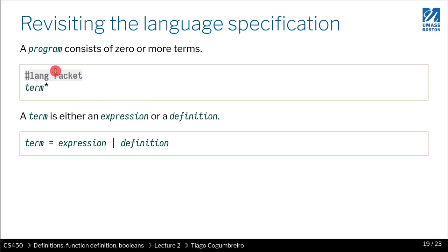Now we are ready to revisit our specification of racket. A racket program has pound lang racket, and then it has zero or more terms. So what are terms? They are either an expression or a definition. And here, notice that I made distinct definition from expression. So a definition is not an expression.